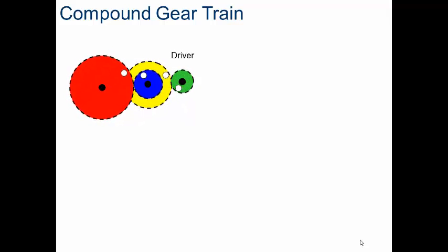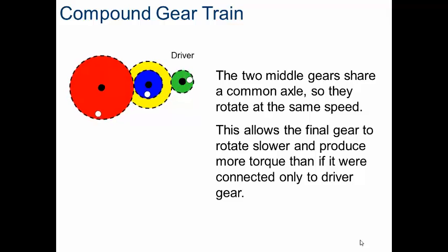Okay, so the green gear is my driver gear. It's mated to the yellow, the blue is just simply stacked on top, and it's driving the red gear. It's important to kind of note that the two middle gears, because they share a common axle, are going to rotate at the same speed. This allows the final gear to rotate slower and force more torque than if it were connected only to the driver gear.